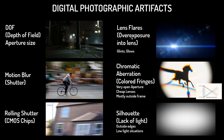Lens flares come from overexposure — anything looking into the camera overexposes into the elements inside the lens, creating interesting shapes. This is commonly called a glint, with a little bit of glow. Also, if you have dirt on your lens you can simulate that — we've done that in different projects to give realism.